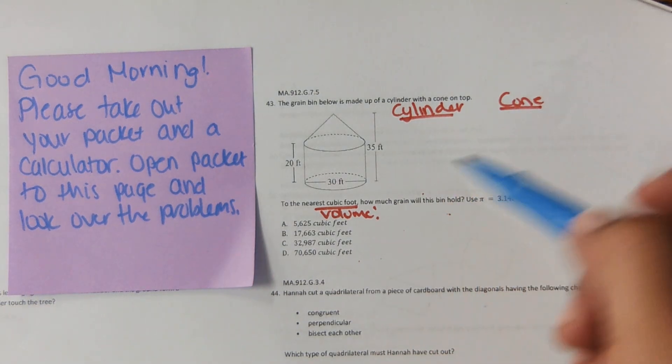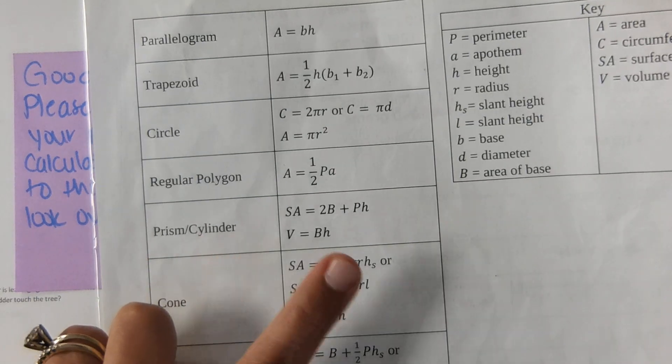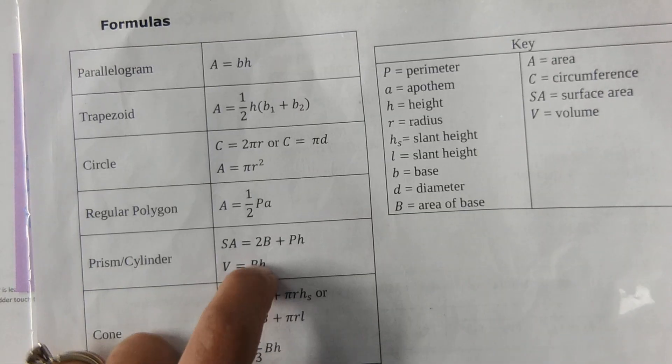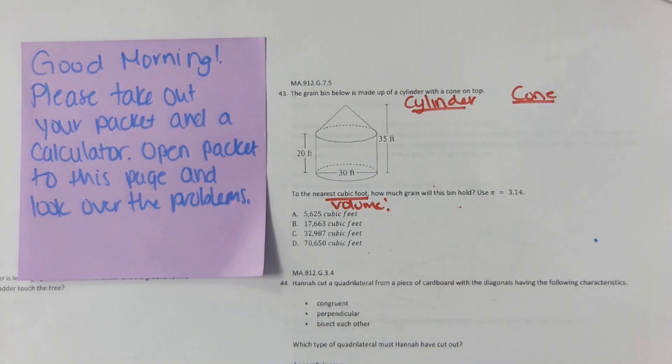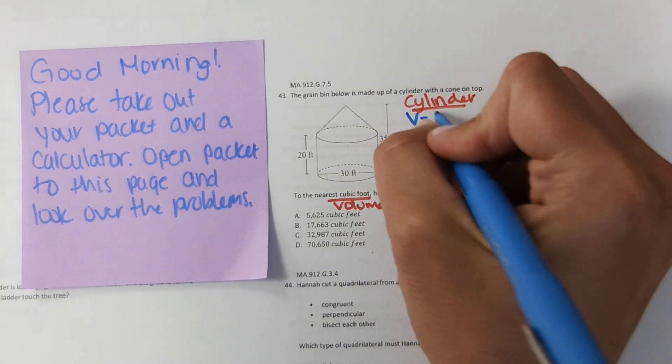Okay, so we need to find the volume of both the cylinder and the cone and then add those volumes together. Volume of a cylinder is capital B times H. Capital B is area of the base. So volume of the cylinder, area of the base times height.